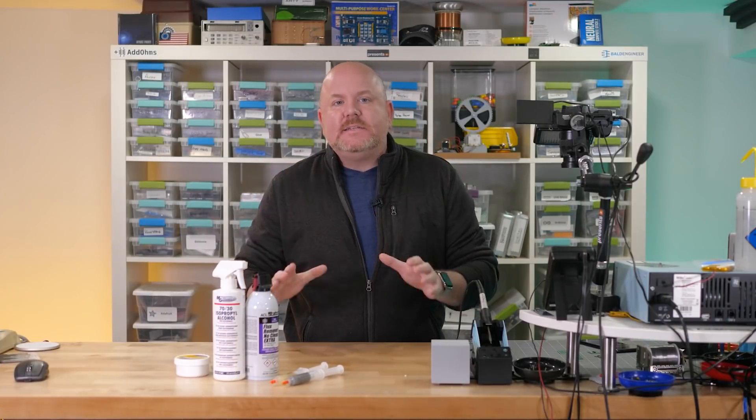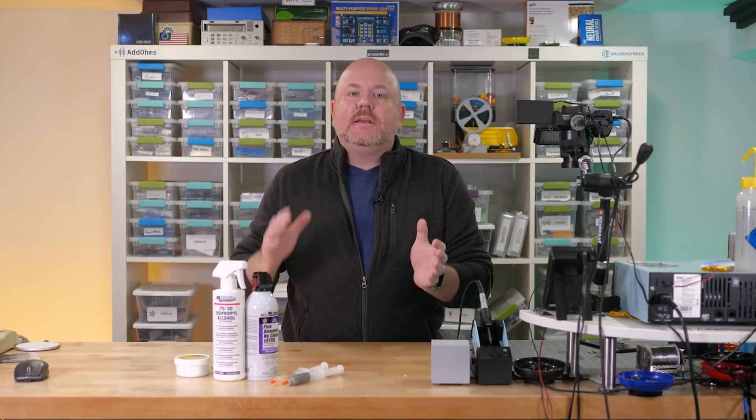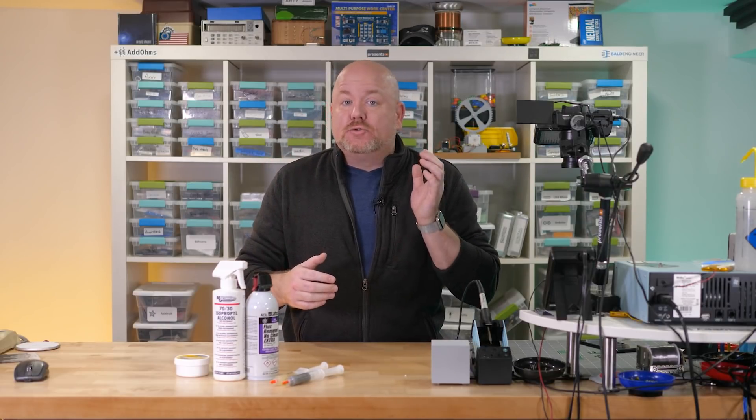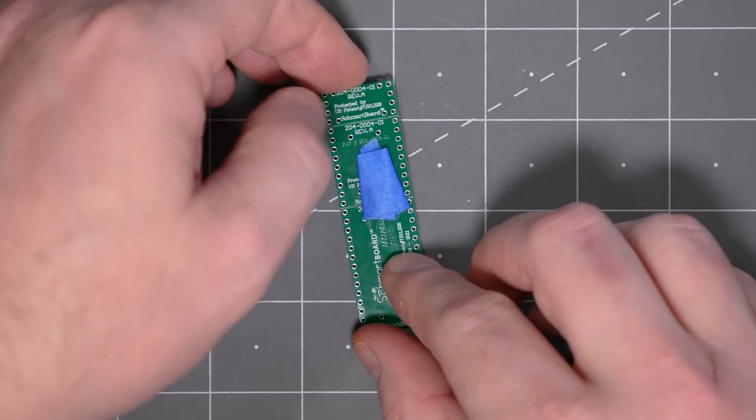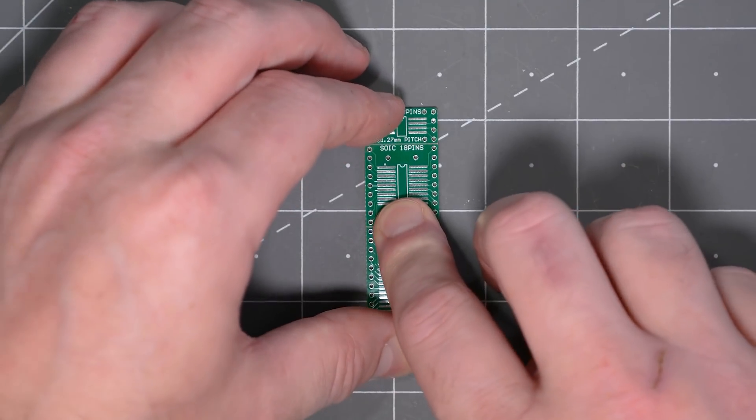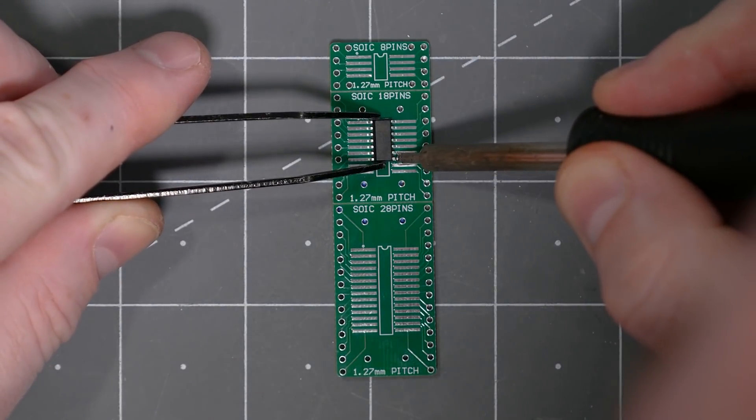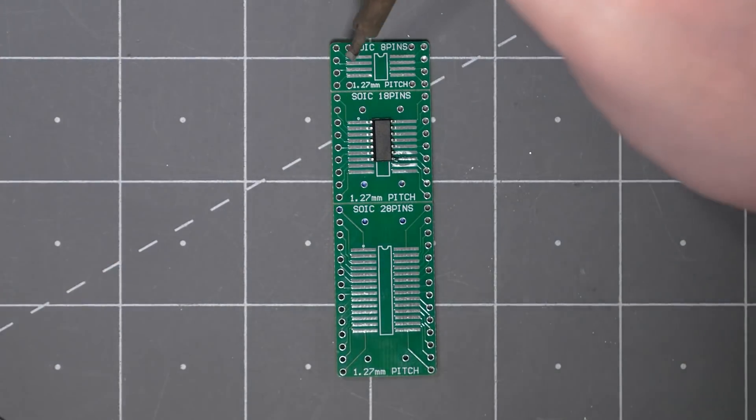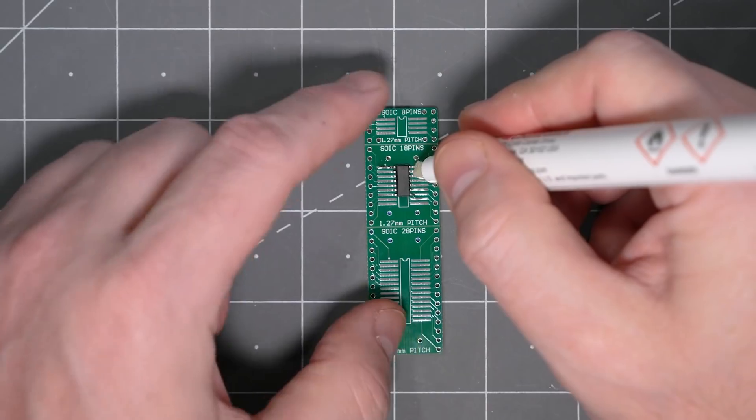There are at least two ways to solder a surface mount IC: drag soldering and hot air reflow. Drag soldering is something that's easy to do with almost any soldering iron. First, I attach the board to the work surface with some painter's masking tape so it doesn't move around. Then, I use my soldering iron to tack down one corner of the IC to the pads. Then, I align the pins and the pads and tack down the other corner.